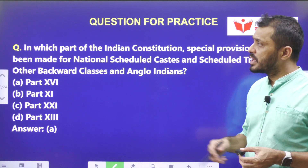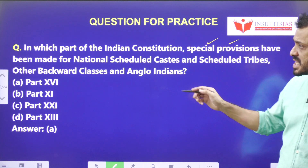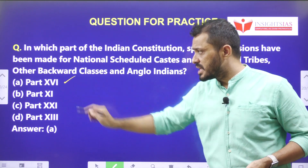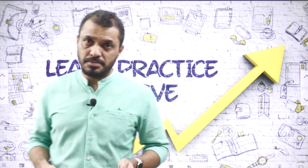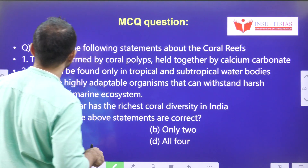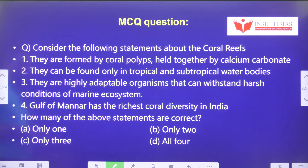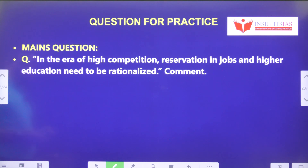Last video's MCQ answer: special provisions for SC, ST, other backward classes, and Anglo-Indians are made in Part 16 of the Indian Constitution. Today's video question: Consider the following statements regarding coral reefs — first, they are formed by coral polyps held together by calcium carbonate; second, they can be found only in tropical and subtropical water bodies; third, they are highly adaptable organisms that can withstand harsh conditions of the marine ecosystem; fourth, the Gulf of Mannar has the richest coral diversity in India. Pick the correct statement.